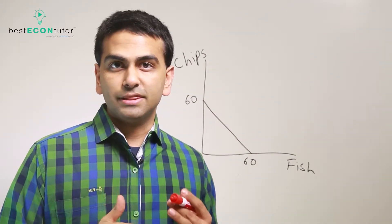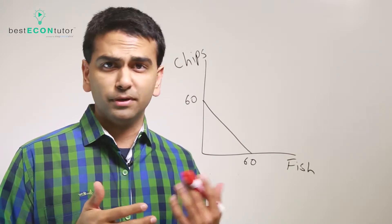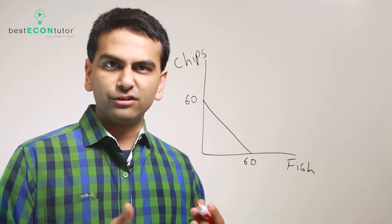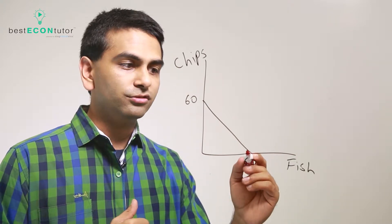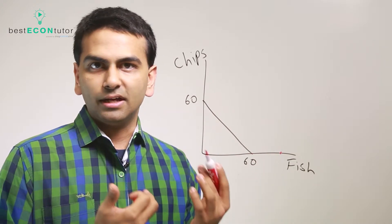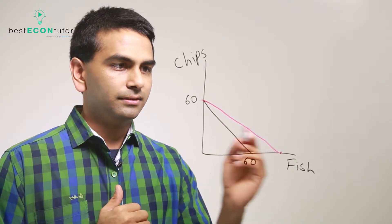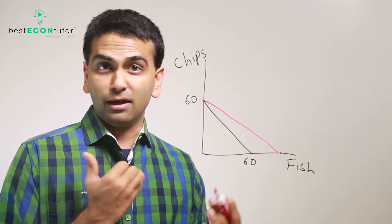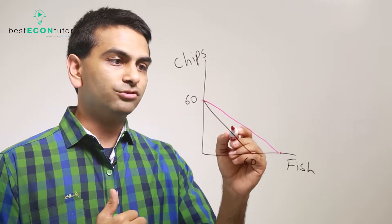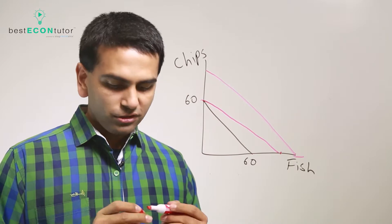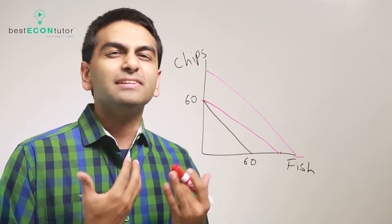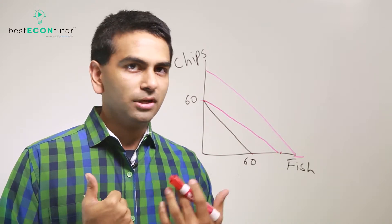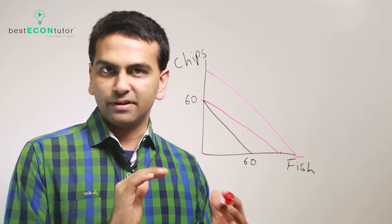Suppose the production technology for one of your goods improves. Say you can make fish and chips, and you found a better way to catch fish. Your PPF will shift: since you're better at making fish, you can now make more fish, but your technology for chips hasn't changed so you can still only make 60 chips. So the PPF shifts out on the fish axis only. If you had a technological improvement for both fish and chips, both intercepts would move out. The PPF shifts when it becomes easier to produce a good — it's not at all based on demand for that good. Just liking chips more won't shift the PPF; it's based solely on what you're able to produce.